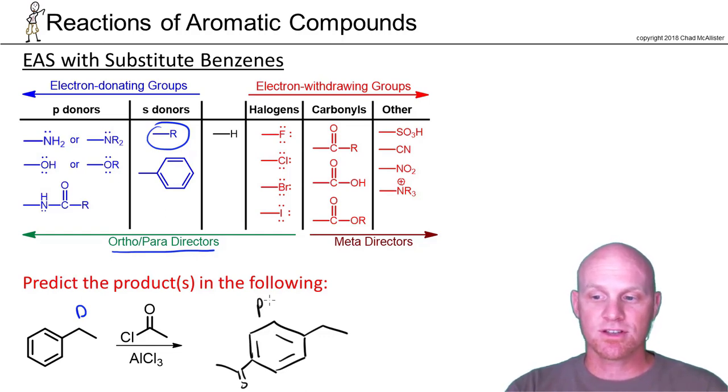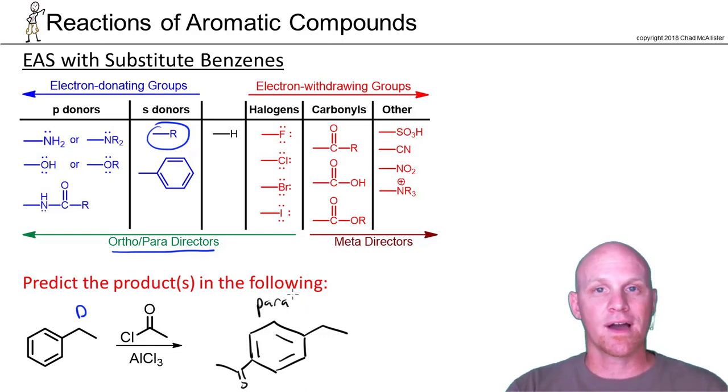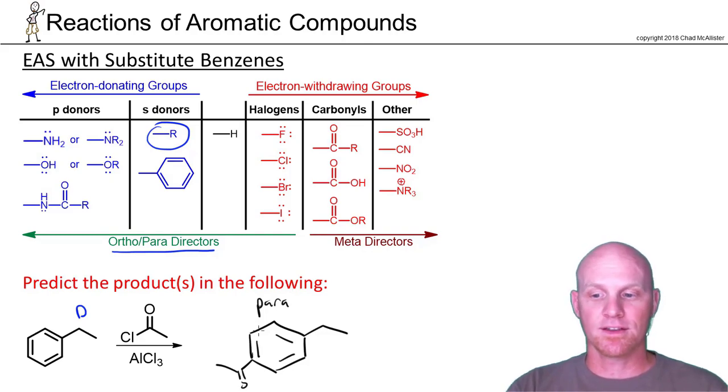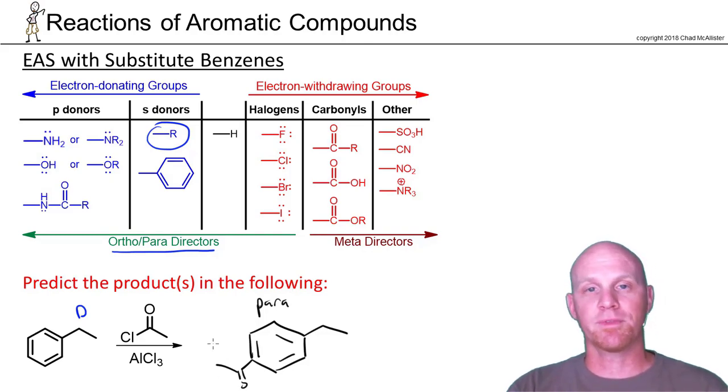Oftentimes, we just have you predict the para product and ignore the ortho when doing a Friedel-Crafts acylation. In this case, I'm just looking at the para. We would get some minor ortho product, probably not very much, due to the bulkiness of the acyl group that's adding.